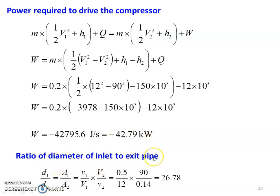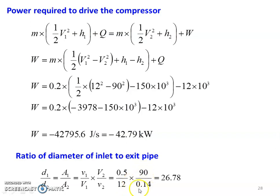For the ratio of inlet to outlet pipe diameter: D1/D2 = √(A1/A2) = √[(specific volume at inlet / V1) × (V2 / specific volume at exit)] = √(0.5/12 × 90/0.14) = 26.78. The ratio of diameter at inlet to outlet is 26.78.